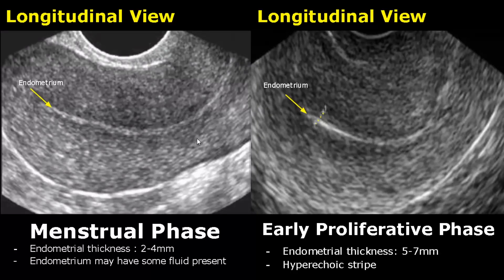The endometrium is scanned in the longitudinal plane using a transvaginal approach. The first phase is the menstrual phase, in which the endometrial thickness is between 2-4 mm and there may be some amount of fluid present, which is normal.